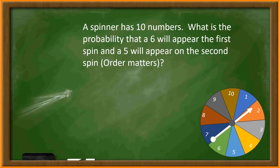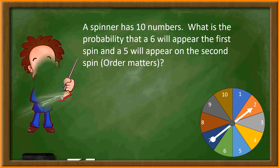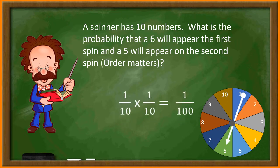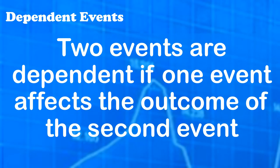A spinner has ten numbers. What is the probability that a six will appear on the first spin and a five will appear on the second spin? The probability of a six appearing on the first spin is one out of ten because there is only one six out of the ten numbers. Since a number is not removed after the spin, the event is independent. The probability of the spinner landing on a five on the second spin is one out of ten because there is only one five out of the ten numbers. So the answer will be one tenth times one tenth, which is one one-hundredth.